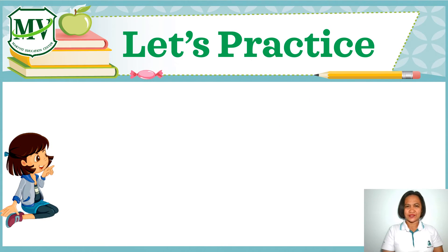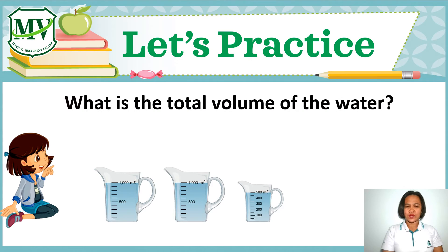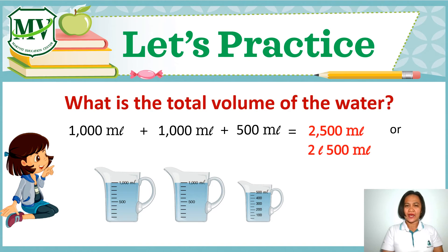Let's do it together. In this example, we have 3 containers. The question is: what is the total volume of the water? The first container has a volume of 1,000 ml. The second container has 1,000 ml. The third one has 500 ml. So if we add all together: 1,000 plus 1,000 equals 2,000, plus 500 equals 2,500 ml, or 2 liters 500 ml.